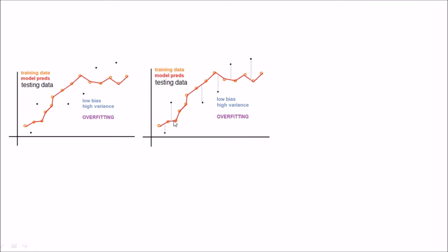And this is called overfitting. We will come to the terms — what bias and variance mean — in just a moment.